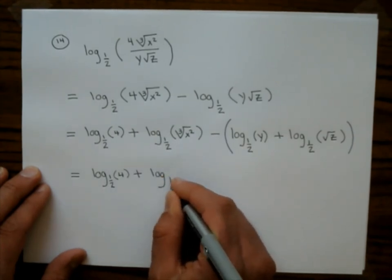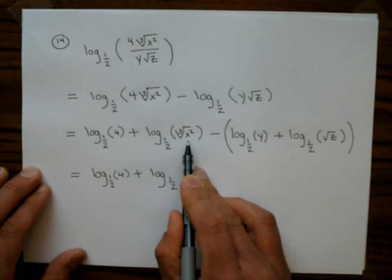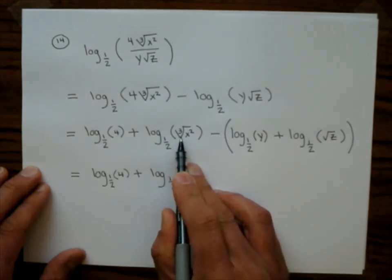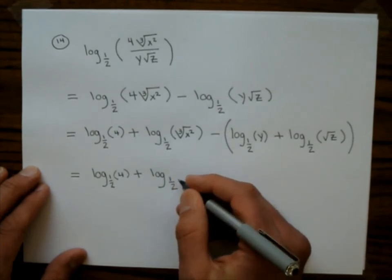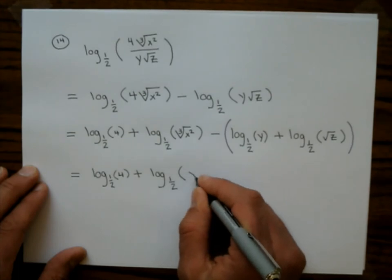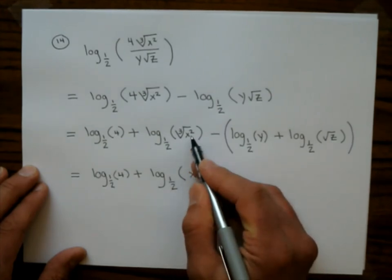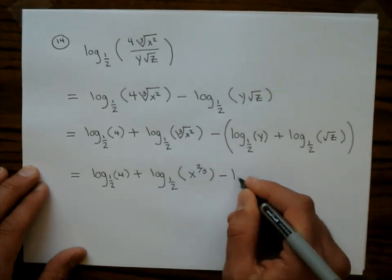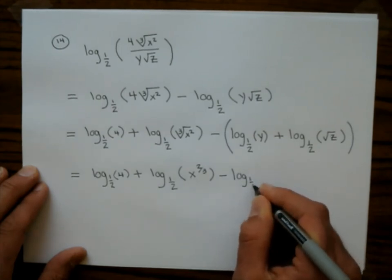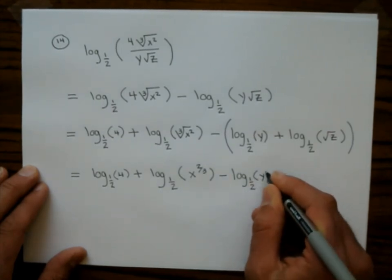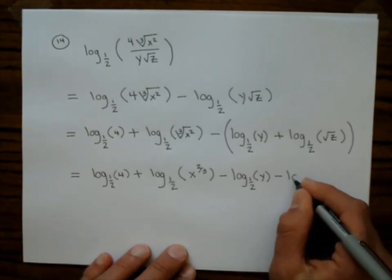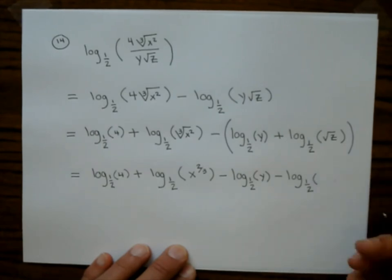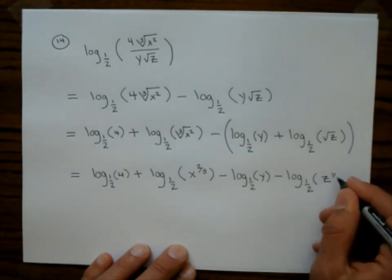My next step: log base 1/2 of 4 plus log base 1/2 of x. I can write the cube root of x squared as x to the 2/3 power — the cube root puts a 3 in the denominator of the exponent, and the square gives a 2 on top, so it's 2/3. Then distributing the negative: minus log base 1/2 of y, minus log base 1/2 of z to the 1/2 power.